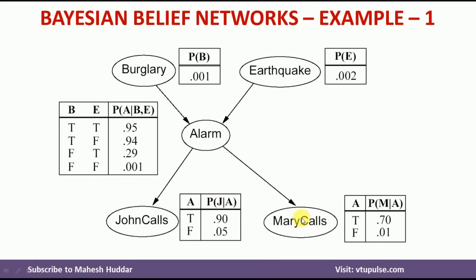The probability that Mary calls given alarm is 0.70, and probability that Mary calls given no alarm is 0.01. The complementary probabilities are: probability that Mary will not call given alarm is 1 minus 0.70, which equals 0.30, and probability that Mary will not call given no alarm is 1 minus 0.01, which equals 0.99.